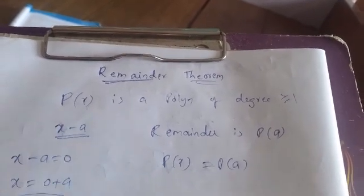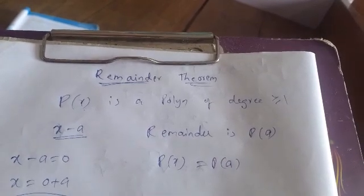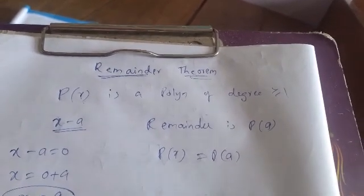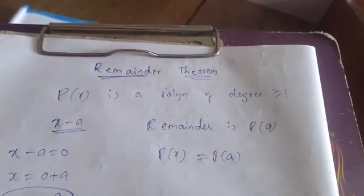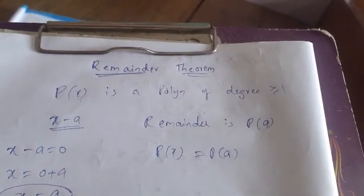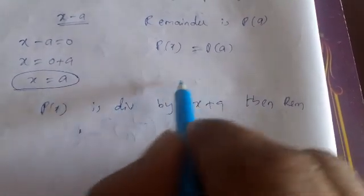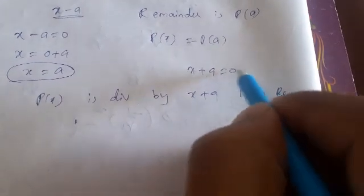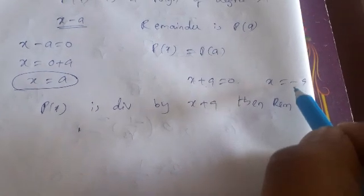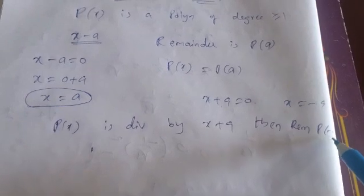If P of X is divided by X plus A, then what is the remainder? Find the zero of X plus A: take X plus A equals 0, so X equals minus A. Put X equals minus A in the polynomial — that is P of minus A.